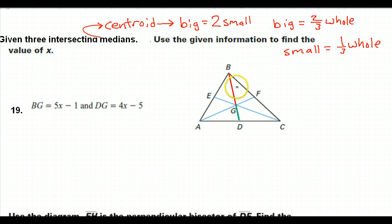BG, I've already mentioned it, is the big piece. So I'm just going to label this right now as the big piece. That means GD here is going to be the small piece. So we've got the red big piece and the green small piece of the median.